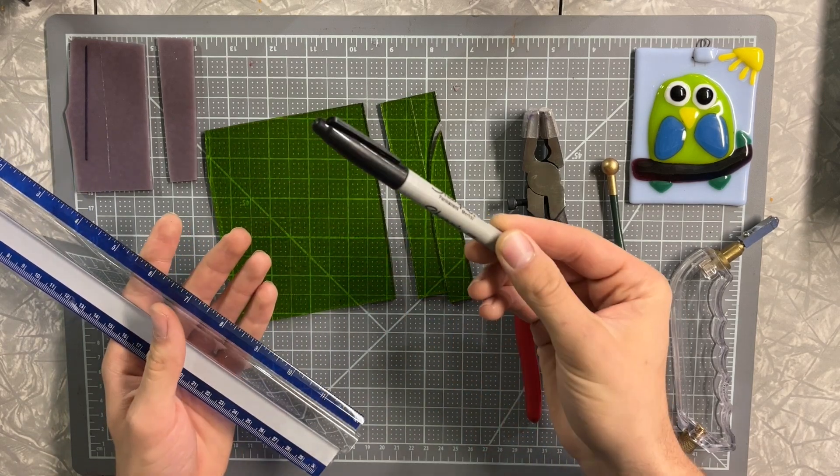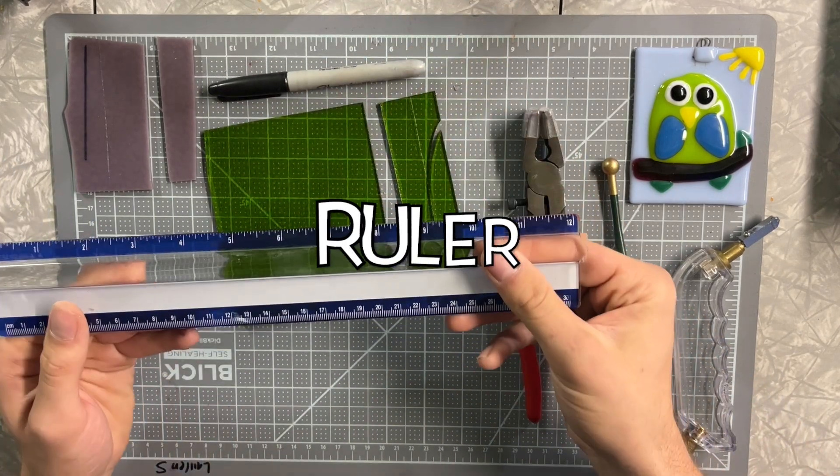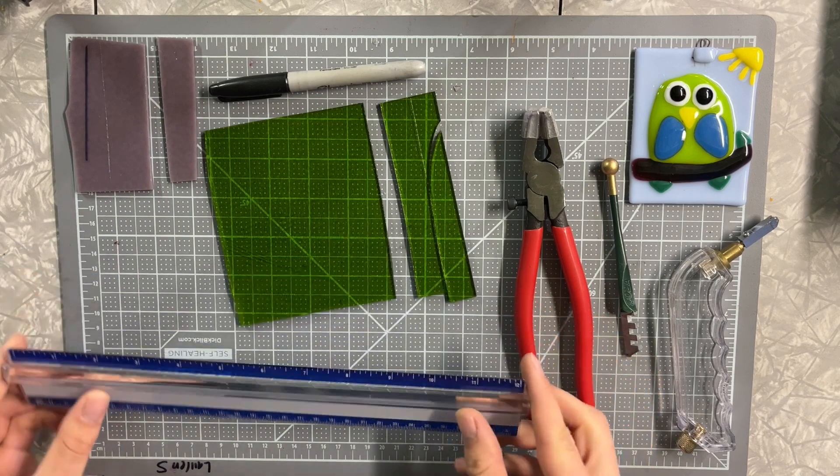You can write really well with Sharpie on glass, so drawing lines that you can practice following on glass can be really helpful when learning. A ruler is always a good tool to make some nice, straight, angular lines.